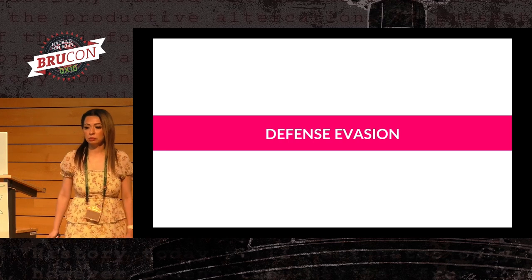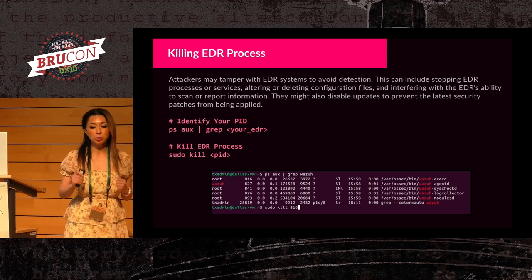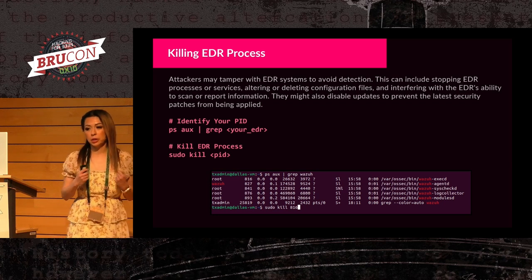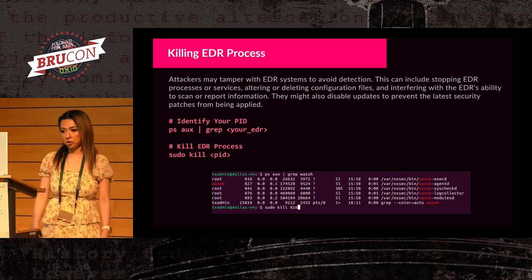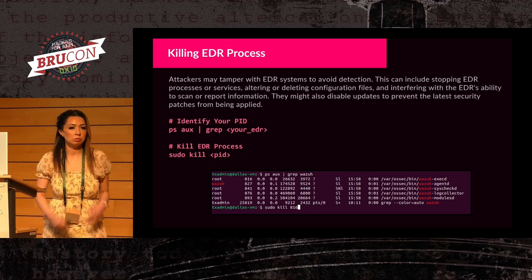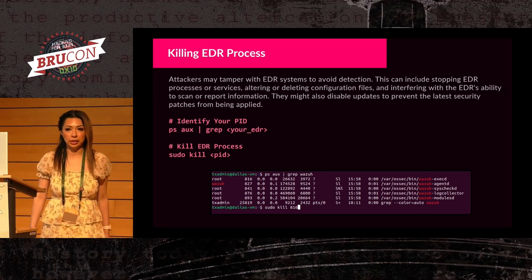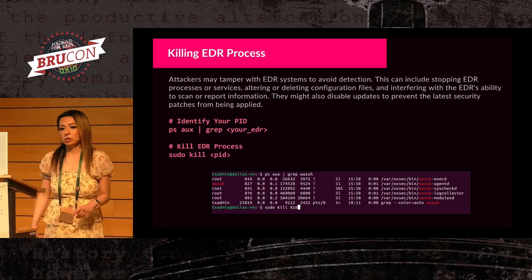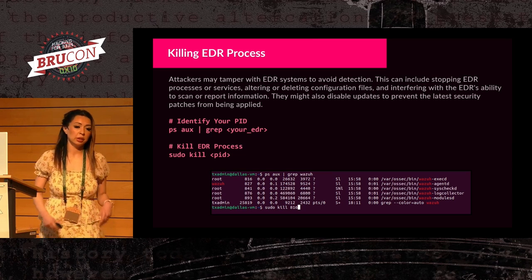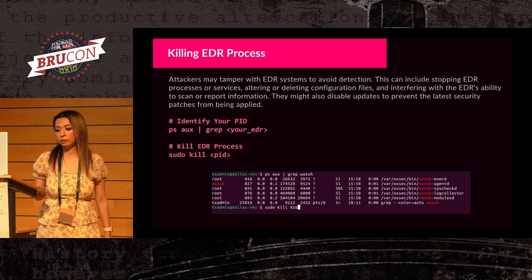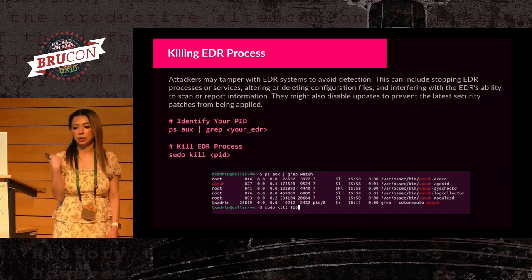Defense evasion — this is another really sensitive activity we want to make sure gets picked up. A hacker could tamper with our EDR systems to avoid detection. This could include stopping the EDR sensor, completely uninstalling it, or getting it to stop updates — stopping an update pretty much prevents the latest security patches from being applied. In this example, I'm identifying the process referencing my EDR and then killing it.